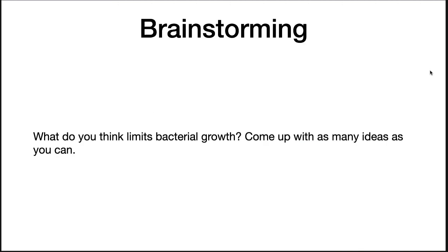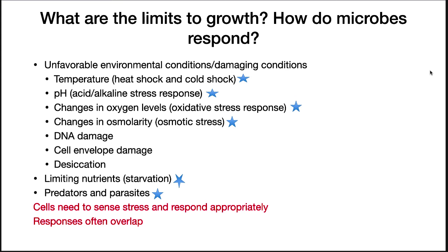This section talks about the limits of bacterial growth. Let's have a brainstorming activity and list as many things as you can think of that would limit bacterial growth. Unfavorable environmental conditions and damaging conditions will limit growth — things like unacceptable temperatures, pH in the wrong range, changes in oxygen levels, changes in solutes in the environment, DNA damage, cell envelope damage, or desiccation. You may also run out of nutrients, or predators and parasites may attack you. In all of these conditions, cells need to respond to stress and act appropriately. Some of these responses overlap. The starred items on this slide are the ones we will talk about throughout the rest of this lecture.